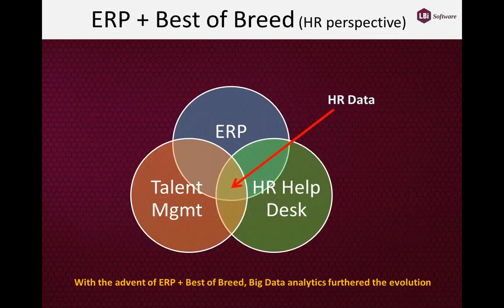With ERP came the capability to really start analyzing data across the enterprise — relating financial data to manufacturing data or to HR data. But ERP couldn't solve 100% of every business's needs, which gave rise to what is commonly referred to as best-of-breed. Best-of-breed solutions like our HR help desk and talent management systems are basically add-on products that enhance the core ERP solutions. With the advent of best-of-breed and ERP, we really started to build high-quality data that companies could use to understand what's going on within the organization.